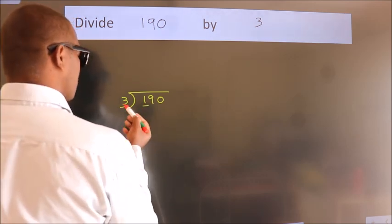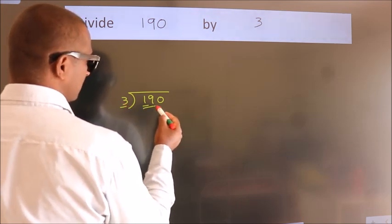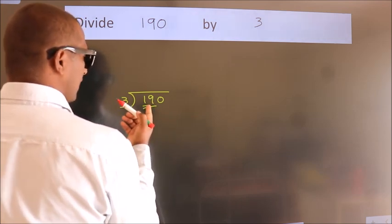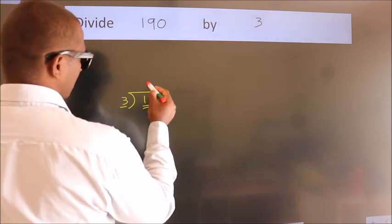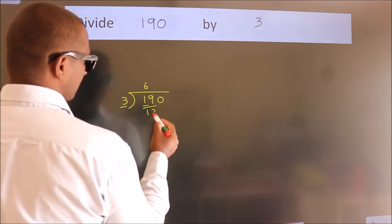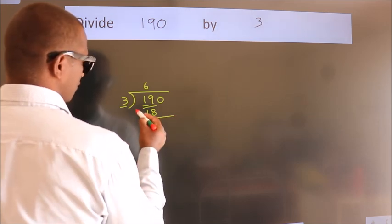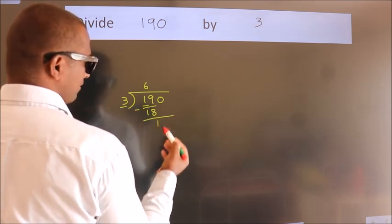1 is smaller than 3, so we should take 2 numbers, 19. A number close to 19 in the 3 table is 3 times 6, which is 18. Now we should subtract. We get 1.